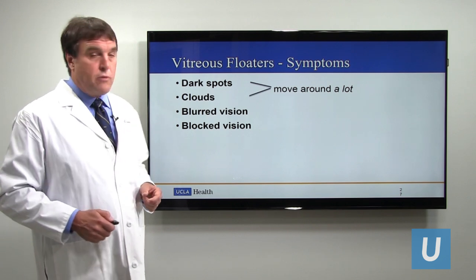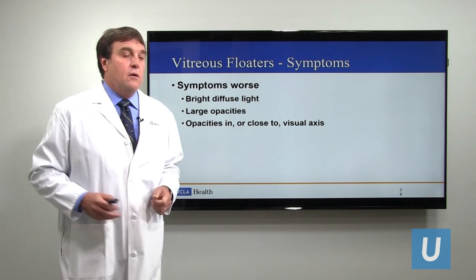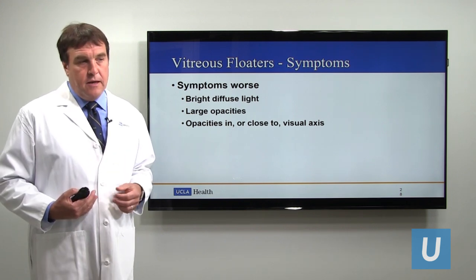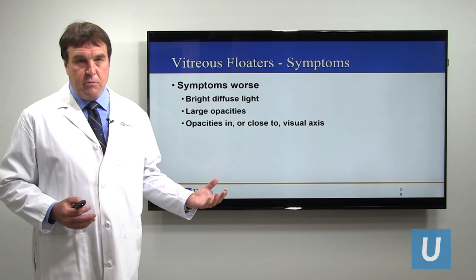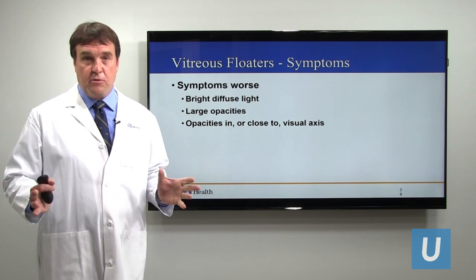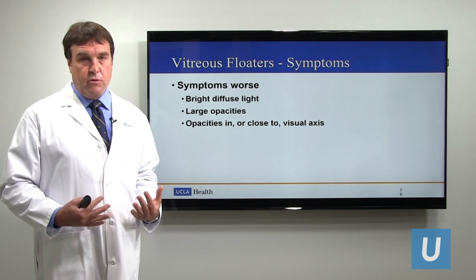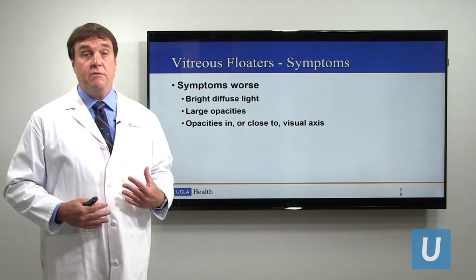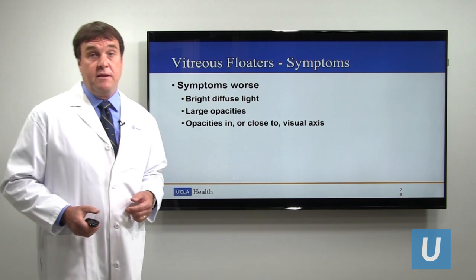The dark spots and clouds tend to move around a lot and block and blur the vision. Floaters are typically most noticeable in bright light settings — particularly in diffusely bright conditions such as on ski slopes. One time a patient called me from his ski vacation on a sunny day; he'd just gotten out on the slopes and noticed all these floaters. That's because bright diffuse light really highlights the floaters. When people on a sunny day walk by a white building and look in that direction, they often perceive a sudden increase in floaters — really just a sudden increase in noticeability of the vitreous opacities.